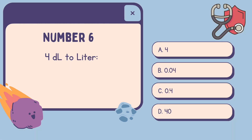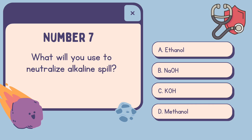Number 6: 4 deciliters to liters — A. 4, B. 0.04, C. 0.4, D. 40. The correct answer is C, 0.4.